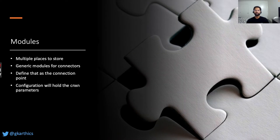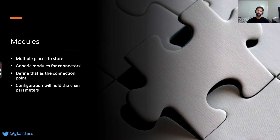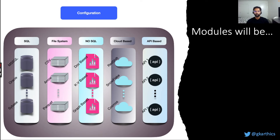Now let's look at modules. The query engine needs to be broken down with a plugin interface to provide multiple module plugin flexibilities. These modules are aimed at different storage options — different databases, different query engines, and so on. Along with the module definition, connection parameters can also be included to isolate connection configuration from code configuration. A module would have higher-level components such as SQL-based, file system-based, NoSQL-based, cloud database provider-based, and API-based options. Each single representation icon is a module.